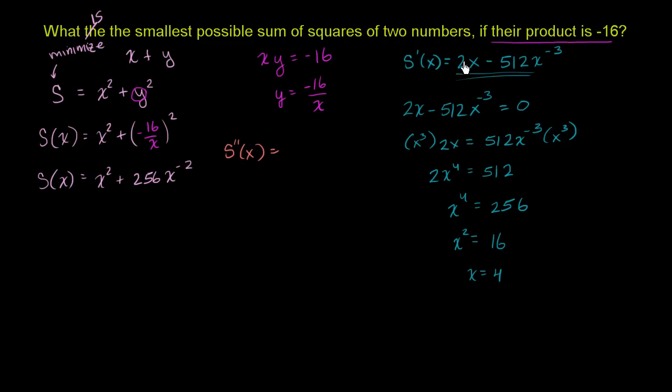So s prime prime of x is going to be equal to 2. And then we're going to have negative 3 times negative 512. So I'll just write that as plus 3 times 512. That's going to be 1,536. x to the negative 4 power. So this thing is actually going to be positive for any x. x to the negative 4, even if it's a negative x value, that's going to be positive. Everything else is positive. This thing is always positive. So we are always in a concave upwards situation.